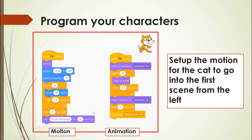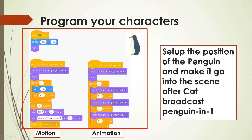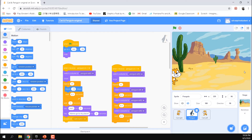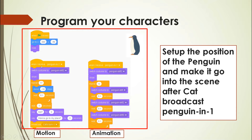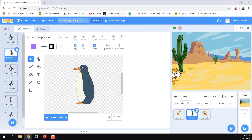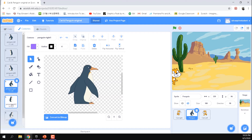This program has a motion part and an animation part. If you're unsure, go back to lesson 3 to review. When the start is clicked, the penguin moves to its end position — it's hidden off-screen and when it receives the 'penguin in one' signal, it comes in. The penguin has six costumes: three animations for the left and three for the right, while the cat only has the right side.